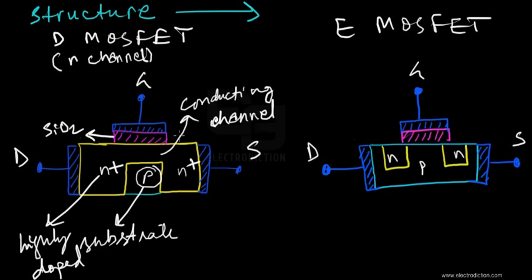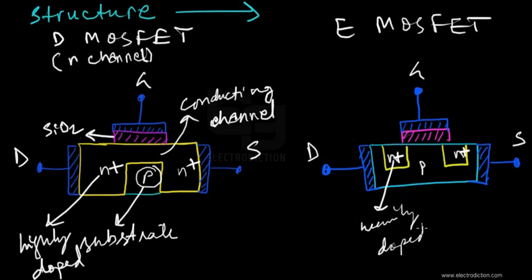The E-MOSFET also has gate, drain, and source terminals. The basic structural difference between the D and E-type MOSFETs is that the E-type MOSFET also has two heavily doped n-type regions doped into the p-type substrate, but there is no conducting channel connecting the two n-type regions on either side.